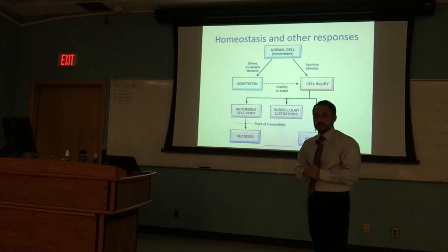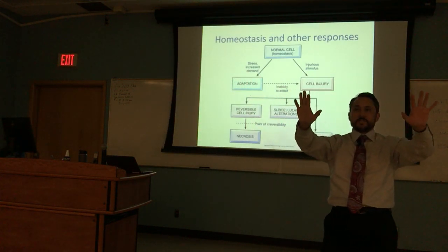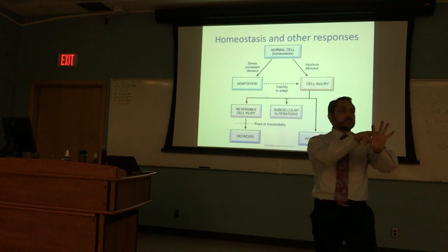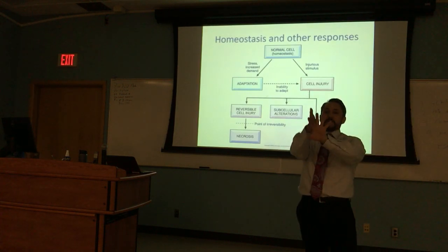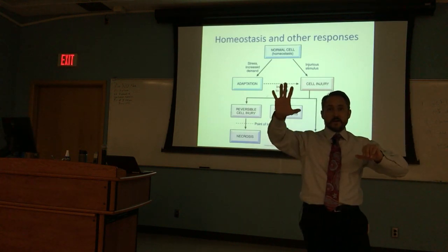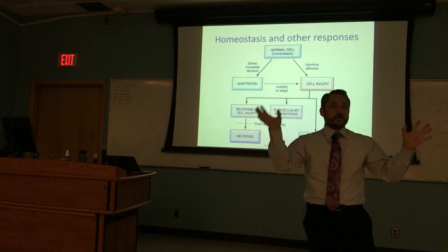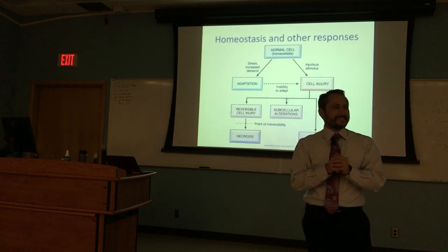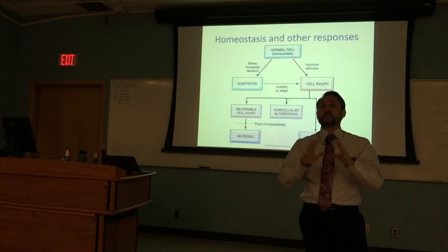Look between your digits — nothing there, right? At one point in utero as an embryo, there was tissue there. Through apoptotic mechanisms, your digits actually divided. You were programmed to have five digits on each hand and foot through apoptotic signals. You may know people where that apoptotic signaling didn't work out perfectly — they have a webbed digit.